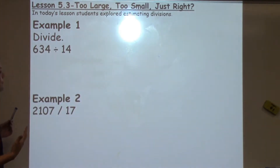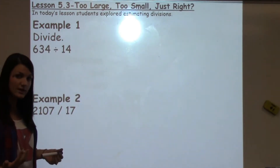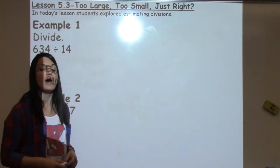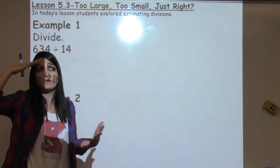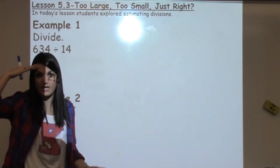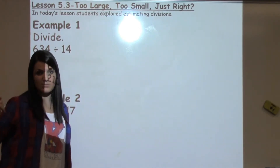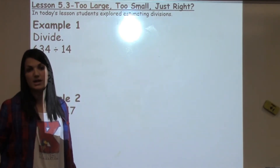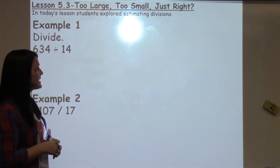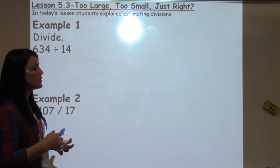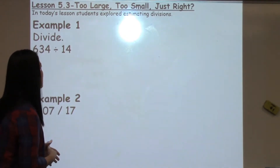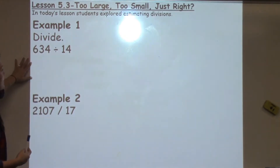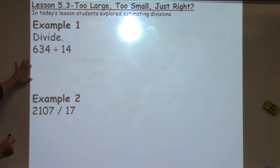They learned a strategy today that had them estimate or do a guess-and-check system, because it's really hard to think of the multiples of a two-digit number in your head. So we did some guessing and checking and estimating those numbers to figure out the best way to start. We're going to look at a couple of different examples.